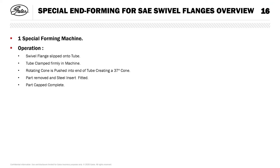We also do a special flange forming procedure which can produce Code 61 and Code 62 flanges. Some customers don't allow welding or brazing, and for those we use this solution — basically a 37-degree flare formed on the end of the tube, with a cone and an O-ring inserted inside the tube. When the two mating parts are clamped up, the more pressure you apply the better the seal.